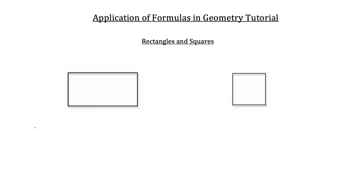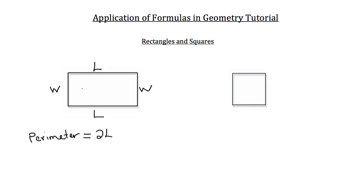To calculate the perimeter of a rectangle you want to add up all the sides. The long sides we'll call the length, abbreviated L, and the short sides we'll call the width, abbreviated W. We have the length twice — top and bottom — so that's 2 times the length, and the width on the left and right, so we add 2 times the width. When you add those together that's the perimeter of the rectangle.